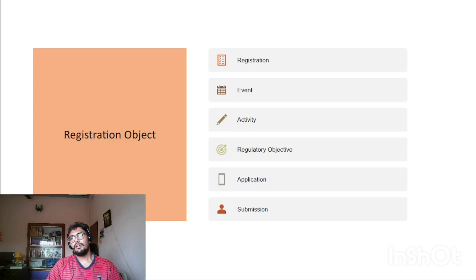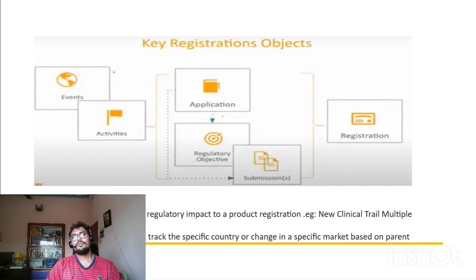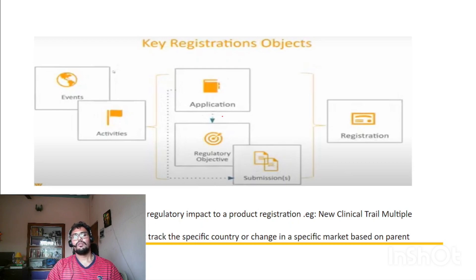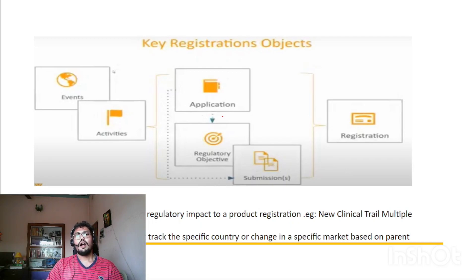Moving to the registration objects: in RIM, registration objects contain the event object, activity object, regulatory objective, application, and submission. Looking at the flow screenshot, the key registration objects are: event, activity, application, regulatory objective, submission, and registration. Each object is linked to the others — event is linked with activity, and activity is also linked with application, regulatory objective, submission, and registration.